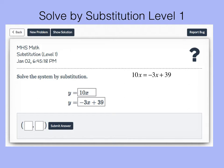Now let's add 3x to both sides and rewrite the equation. Let's combine like terms. 10x plus 3x is 13x equals 39. And so when we divide both sides by 13 we get that x equals 3.